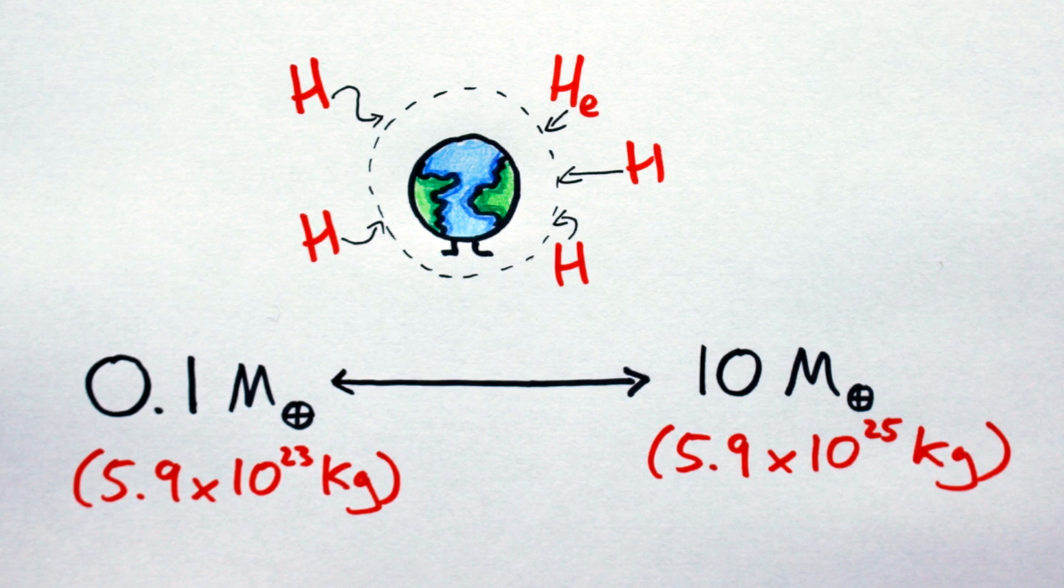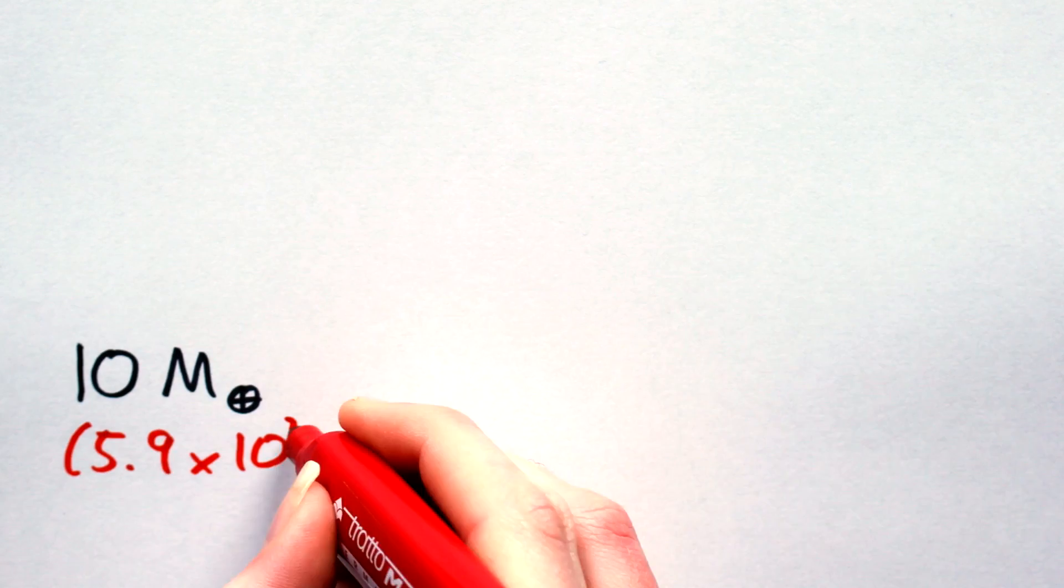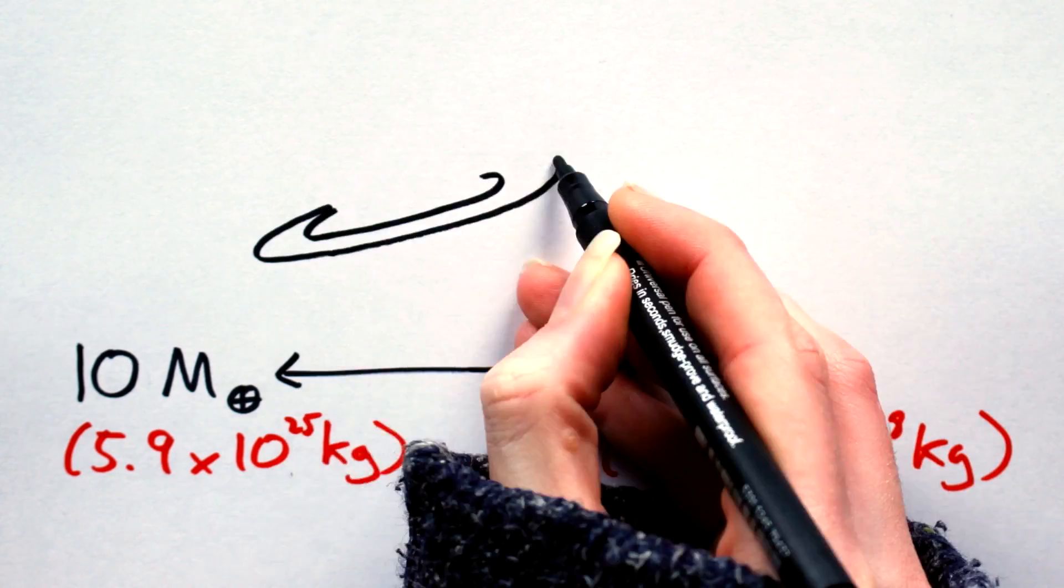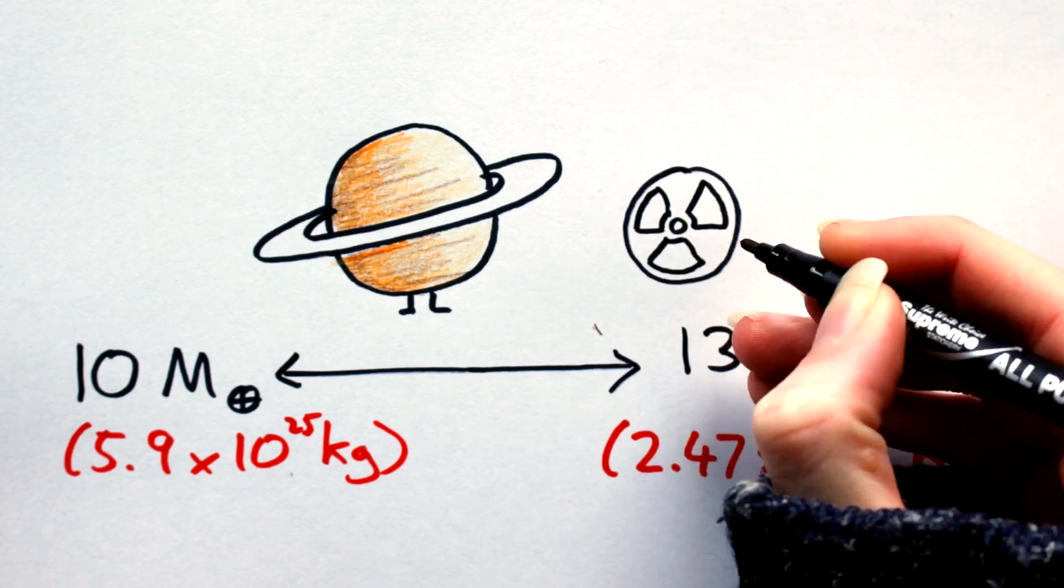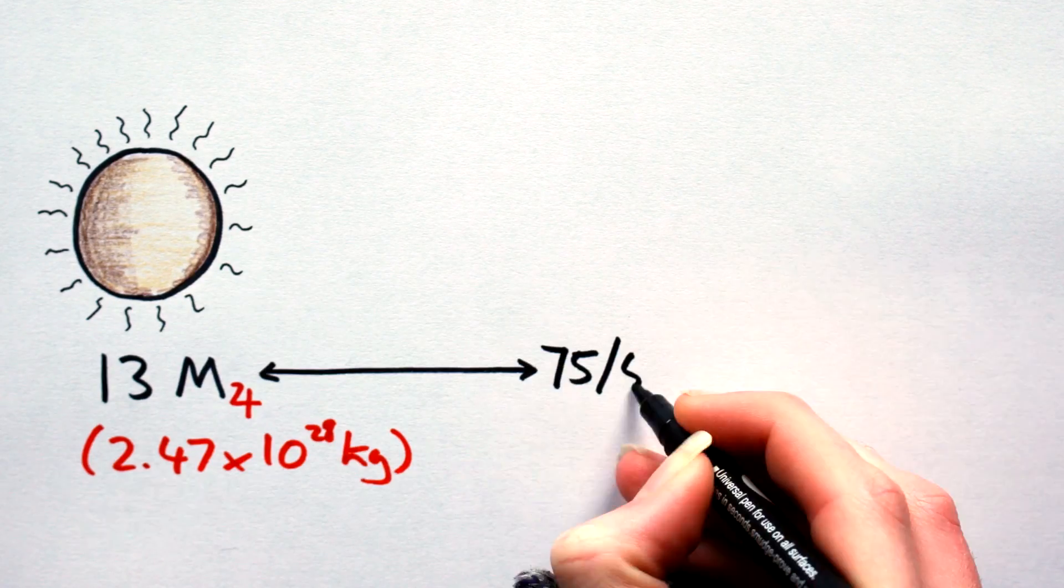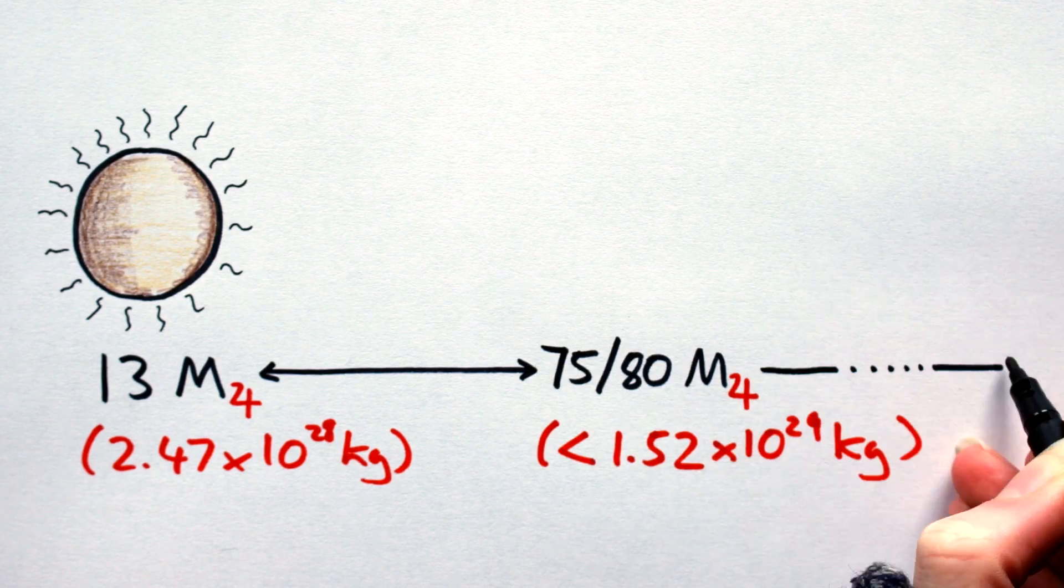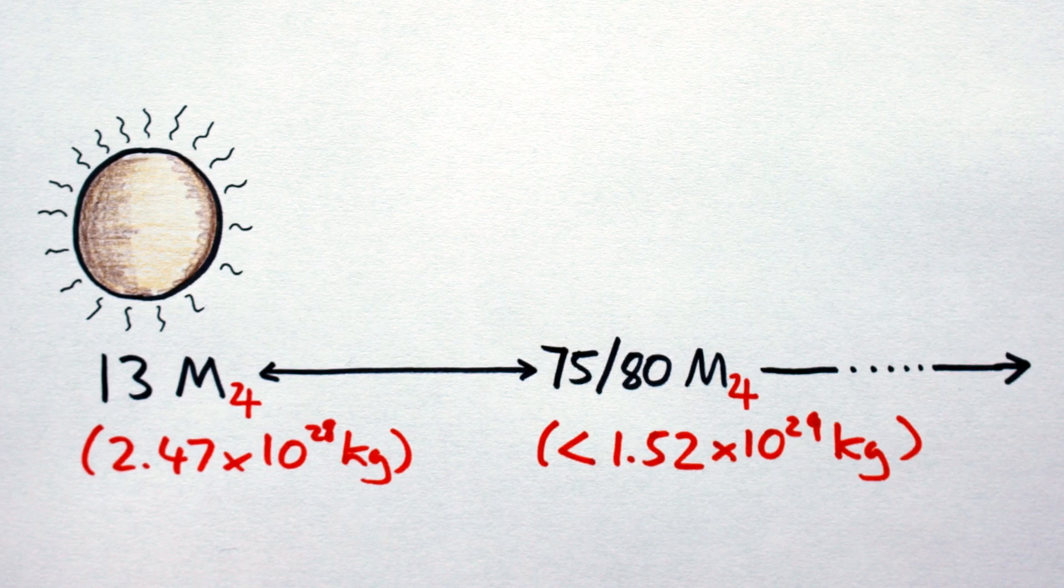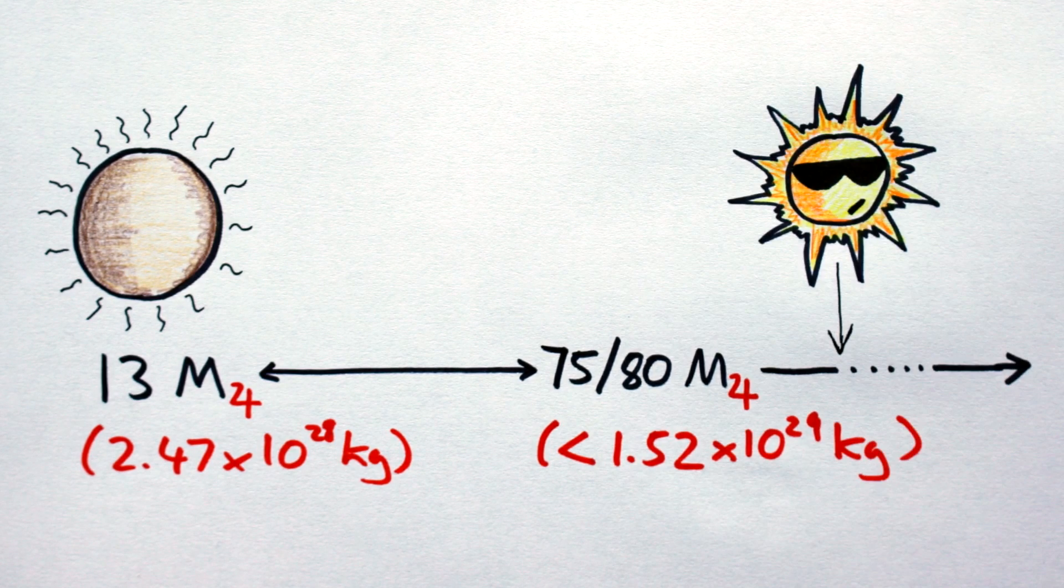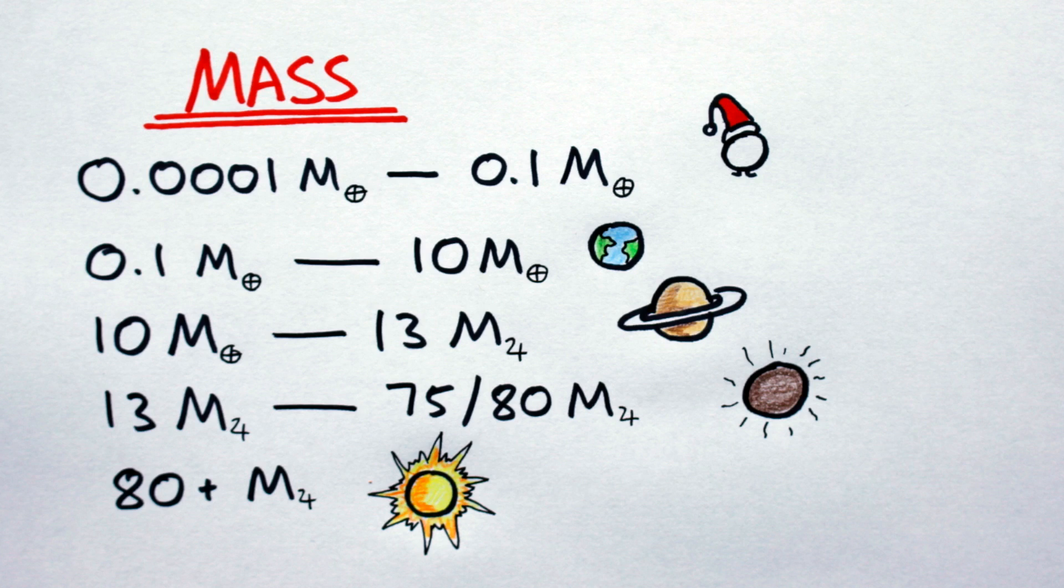The mass range of gaseous planets is 10 Earth masses to 13 Jupiter masses. At 13 Jupiter masses, gas giants may begin deuterium fusion, so it would have to instead be called brown dwarfs. Brown dwarfs can go up to about 75 to 80 Jupiter masses. Objects greater than 80 Jupiter masses will be massive enough to begin hydrogen fusion in their cores, which is the defining characteristic of stars. Okay, so now we have a nice mass range to plug into our density equation.